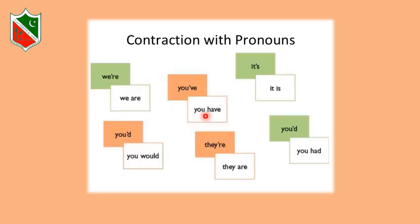Now let's talk about contraction with pronouns. You are familiar with this concept and have seen many contractions in reading. Here are some: we're = we are, you'd = you would, you've = you have, they're = they are, it's = it is, you'd = you had. These are contracted forms and we write contractions with the help of an apostrophe.